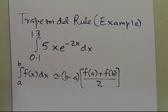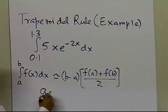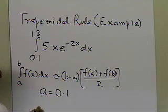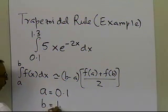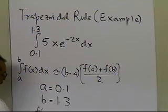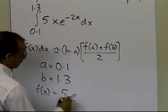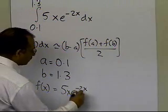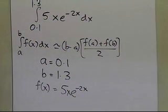That's the approximate definition. Now, here we know what a is, what b is, what the function is, so I'm going to write it down so that it's clear. a is 0.1, b is 1.3, and the function itself is 5x e to the power minus 2x. That's what we have.